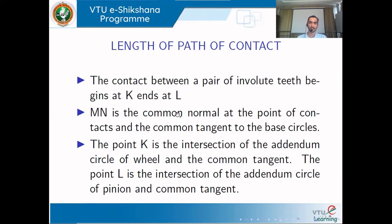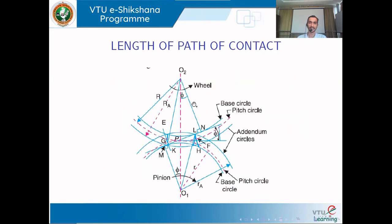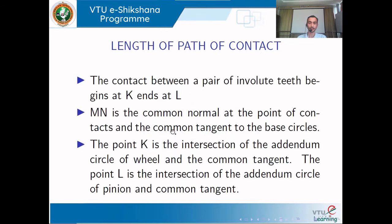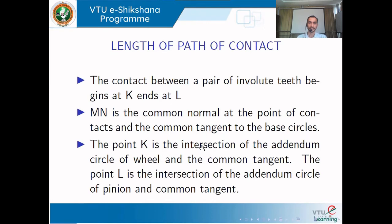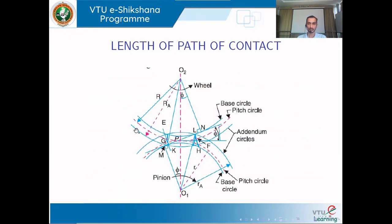The contact between a pair of involute teeth begins at K and ends at L. MN is the common normal to the point of contact and is also tangent to both base circles; it passes through the pitch point to satisfy the law of gearing. Point K is the intersection of the addendum circle of the wheel with the common tangent MN. Point L is the intersection of the addendum circle of the pinion with the common tangent MN.